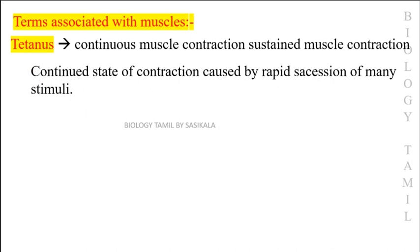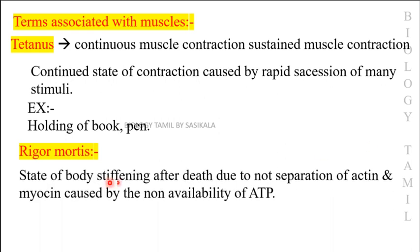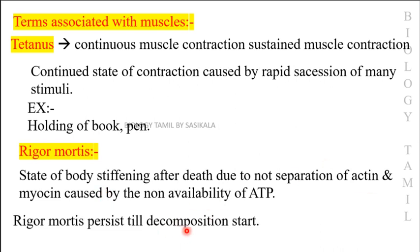For example, holding a book involves continuous muscle involvement. Rigor Mortis is a state of body stiffening after death, due to the non-separation of actin and myosin caused by the non-availability of ATP. Rigor mortis persists until decomposition starts.